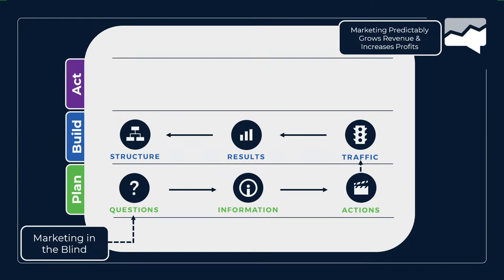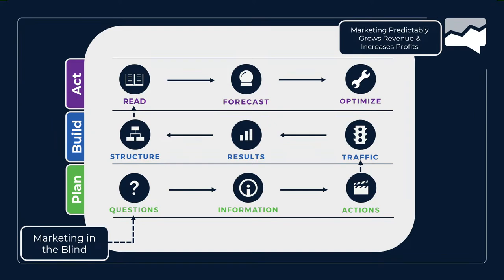Once your measurement implementation is built out, you can start acting upon it. First, you read the reports and figure out what's working and what's not — that gives you your basic benchmarks. You then use those benchmarks to forecast what your near future will look like based on past results, and ultimately you measure against those forecasts. That's how you know what optimization steps to focus on, and that's how your marketing efforts will predictably and consistently grow revenue and increase profits.